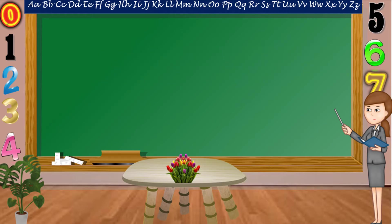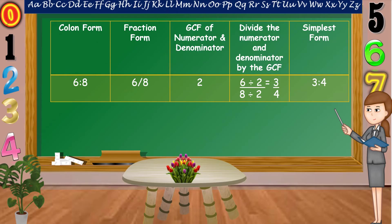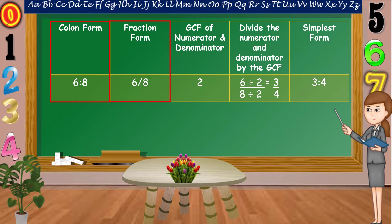To find the answer, let us study the table presented. Ratio can be expressed in colon form or in fraction form. There are 6 books for every 8 pupils. So, in colon form, we can write this as 6 is to 8. In fraction form, it is 6/8, or 6 over 8.